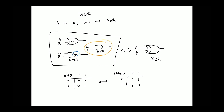So XOR's truth table would be this — the difference is that one entry.